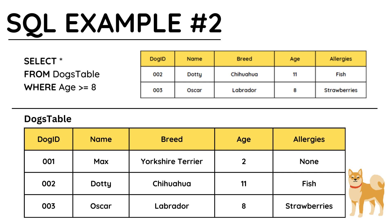The usual comparison operators work in SQL: greater than, greater than or equal to, less than, less than or equal to, equal to, and not equal to. Not equal to is exclamation mark equals, just like in Python. Because age is an integer field, I do not put speech marks around the value of 8. You can see, next to the SQL code, what would happen when it is executed — all the fields are displayed, but just for the dogs who are 8 years old or greater, which is Dotty and Oscar.